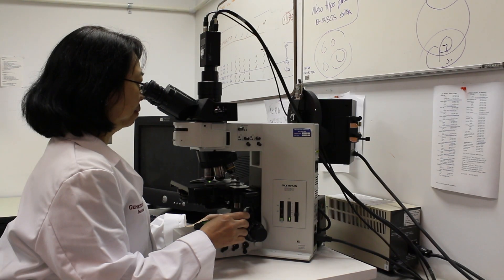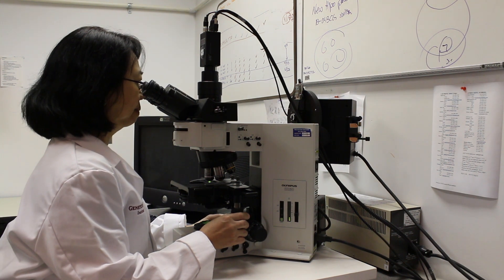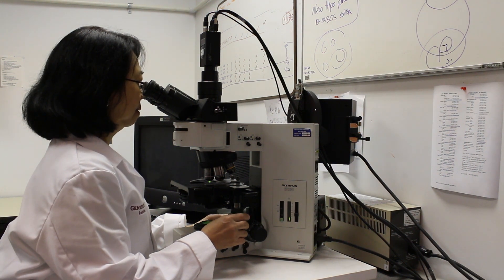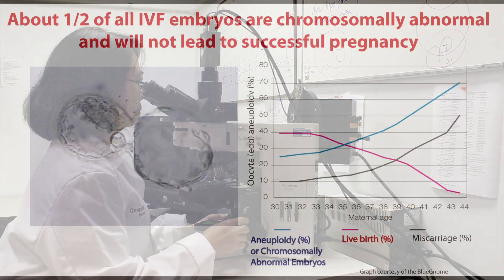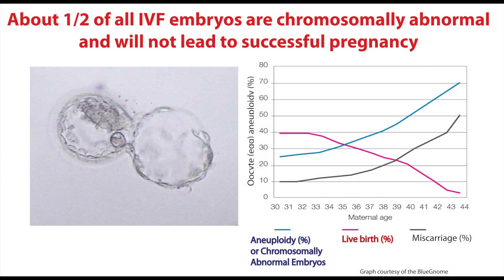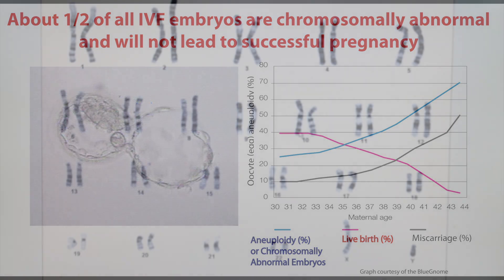The Genetics and IVF Institute has been a pioneer in embryo testing for genetic diseases and chromosome abnormalities since 1993. We now know that about one half of all IVF embryos are chromosomally abnormal and will not lead to a successful pregnancy.